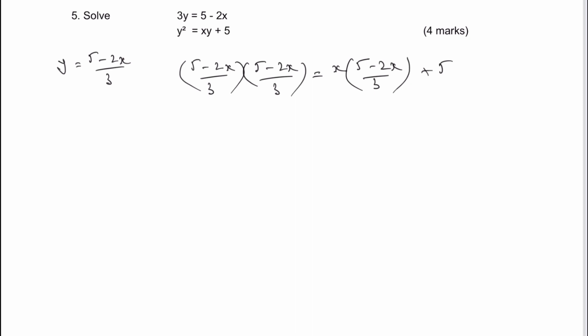On the left-hand side, I'm going to multiply those two fractions together. I can multiply the top to get 25, then minus 10x minus 10x plus 4x squared, and that's all divided by nine — don't forget, when you multiply fractions together, you also multiply the denominators. On the right-hand side, I've got x multiplied by (five minus two x) all divided by three, giving me five x minus two x squared divided by three, plus five.